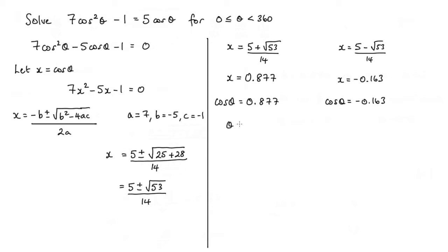So to find what theta is, we have theta equals cos to the minus 1 of 0.877, and in this case here, theta is cos to the minus 1 of negative 0.163. Now getting your calculator and plugging some values in, the first value here is 28.717 degrees, and for this one, the value of theta for here is 99.381 degrees.